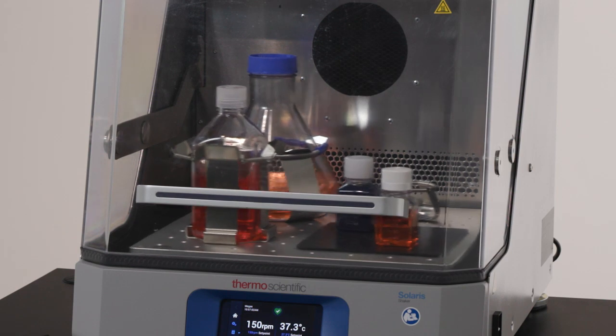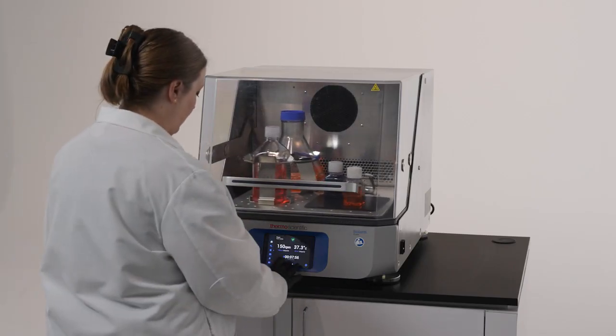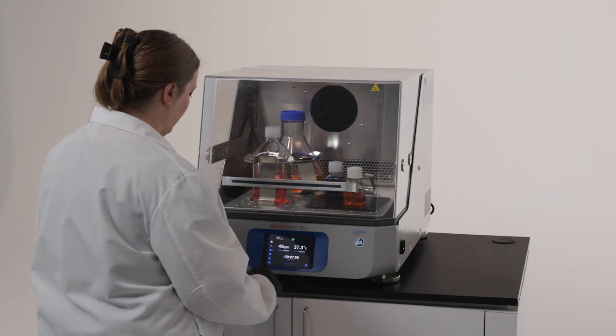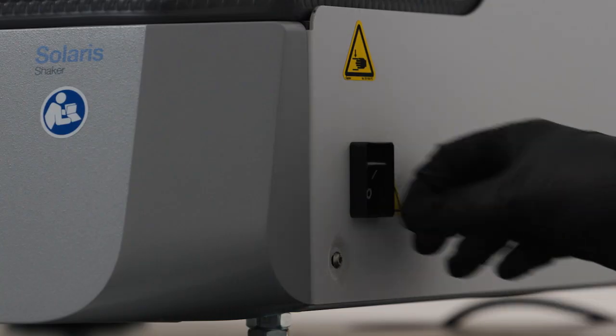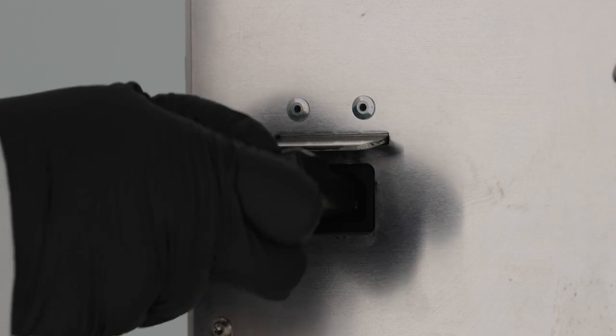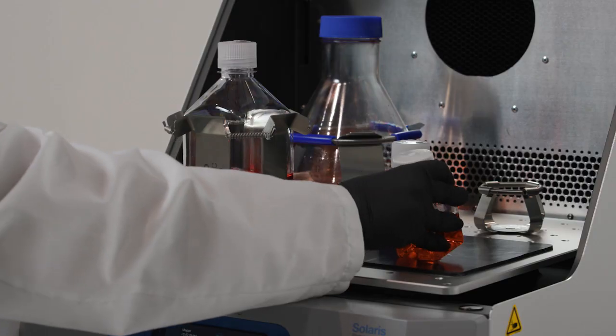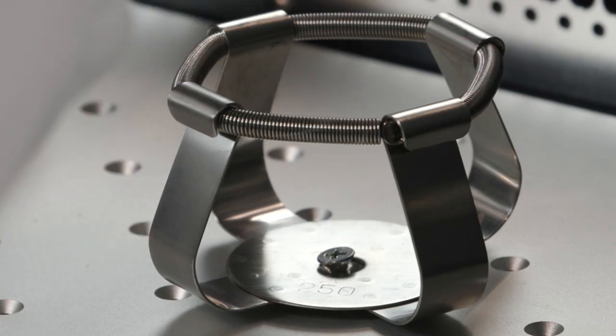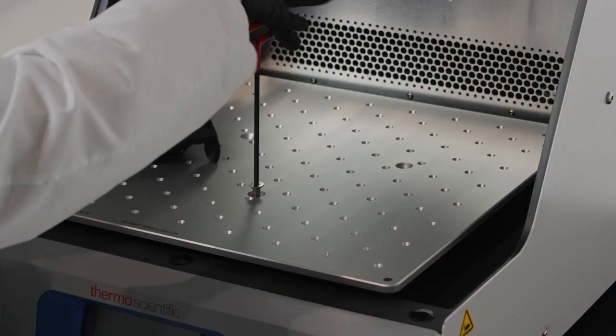Unfortunately, spills happen, but Solaris benchtop shakers were designed to protect the shaker mechanism from these accidents. Before cleaning your shaker, turn off the unit and unplug it from the outlet. Carefully remove any accessories and vessels from the shaker, and then unscrew and remove the platform.